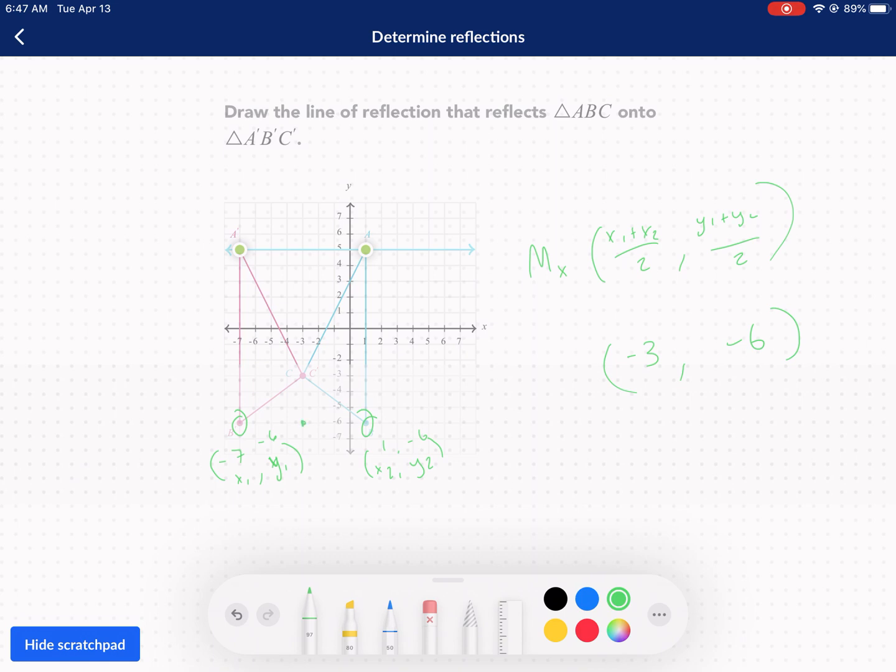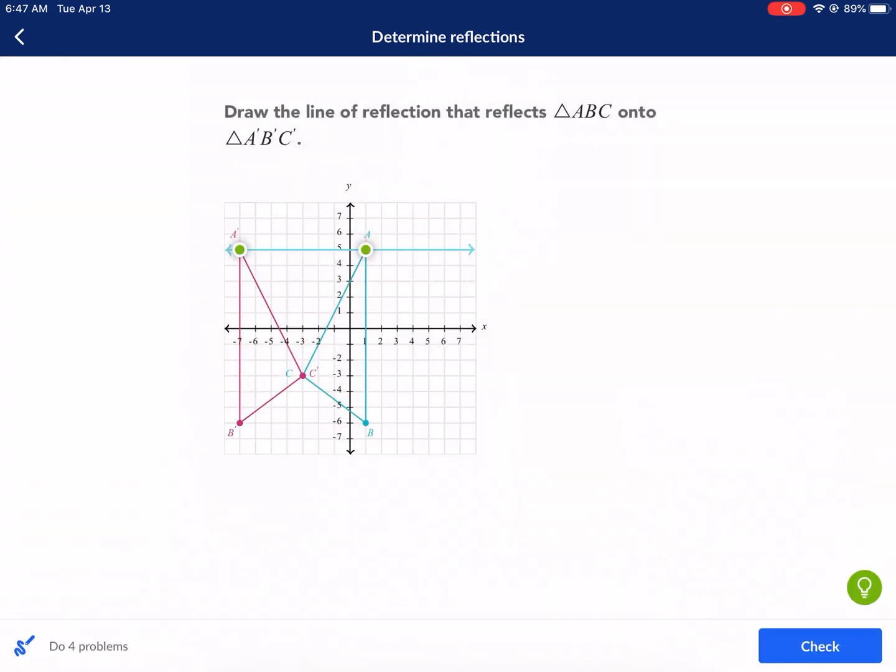So negative three comma negative six. Now when we do the same thing for up here with the a's, we're going to get that the point is right there. And essentially, once you find the two midpoints, so that midpoint was negative three comma five. This was negative three comma negative six. Essentially, you just connect the two midpoints that you found. And then that's your line of reflection.